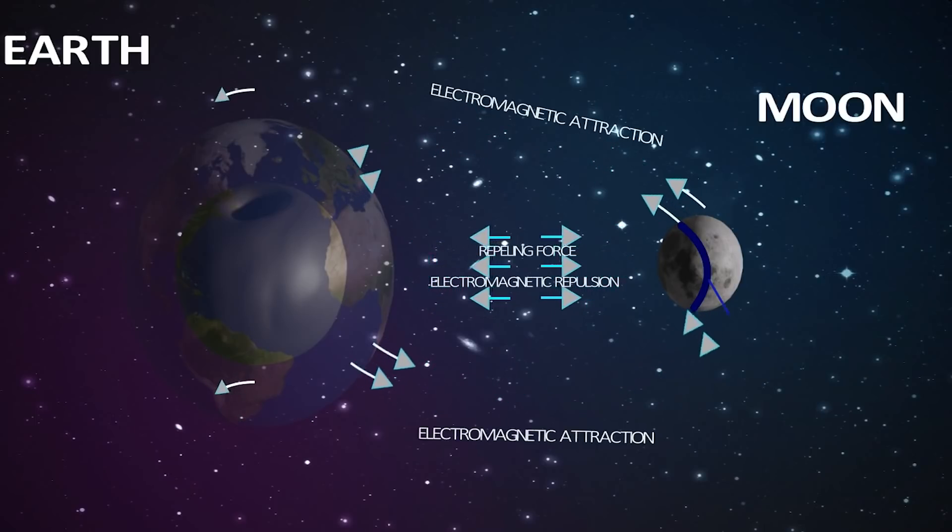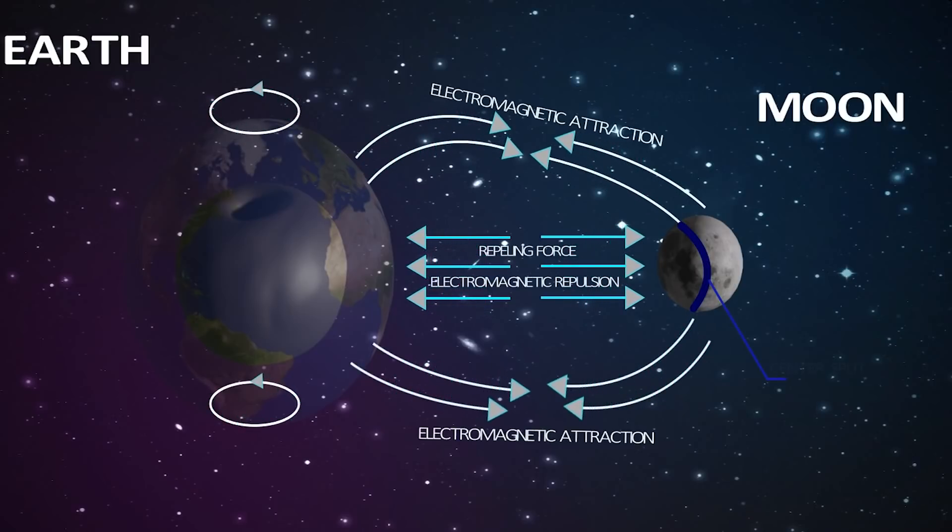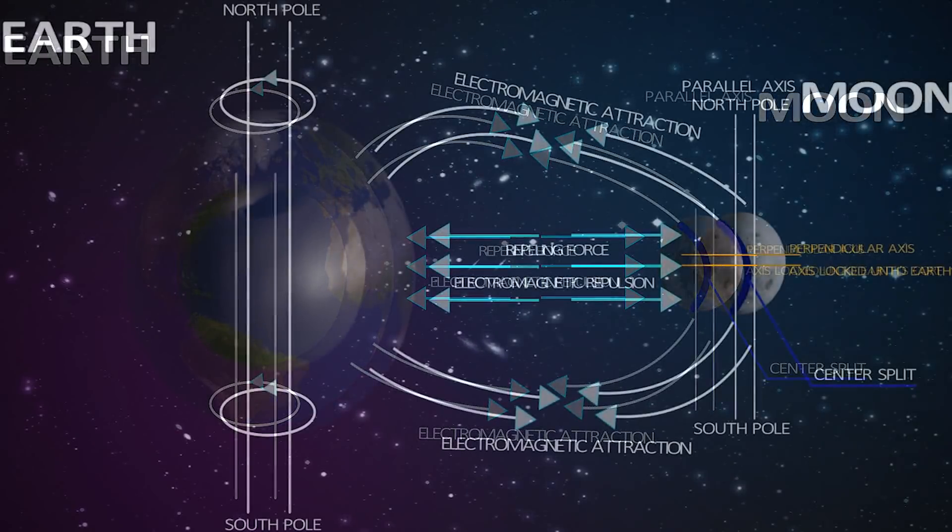And the half-sphere on the opposite side, the far side to the earth, is pulling or attracting towards the planet, which keeps it locked onto earth's structure.